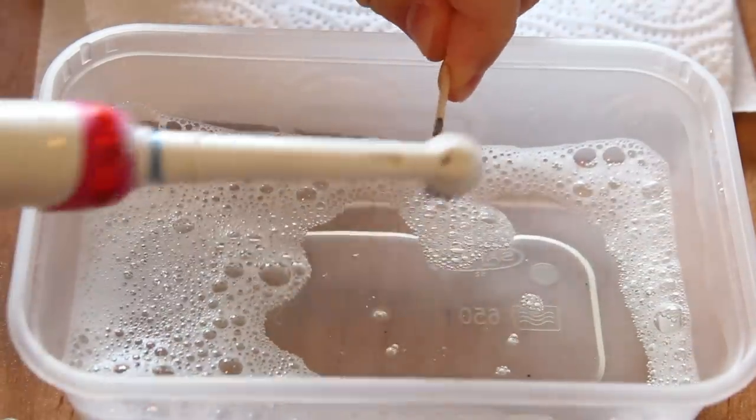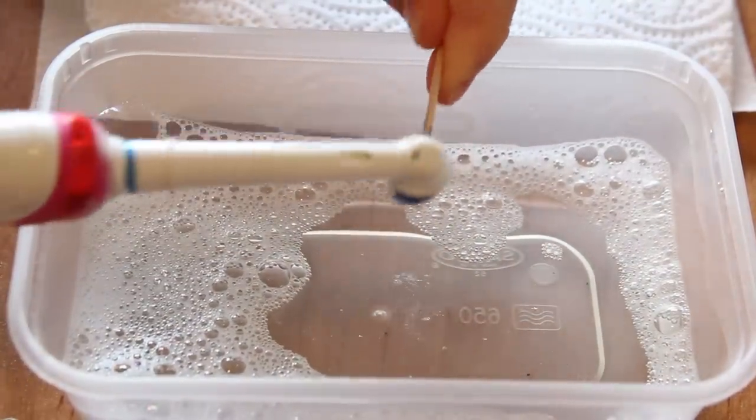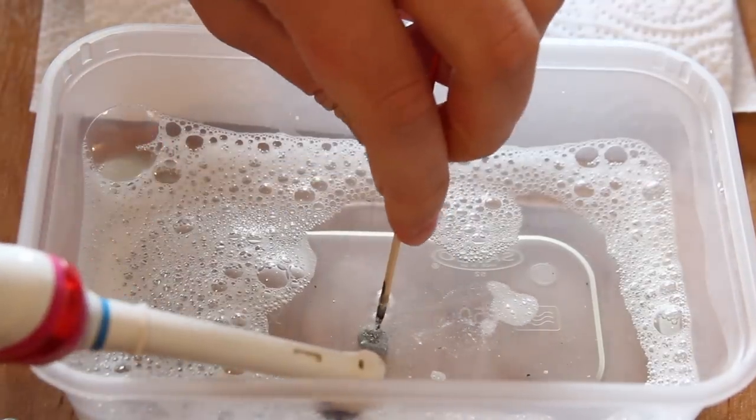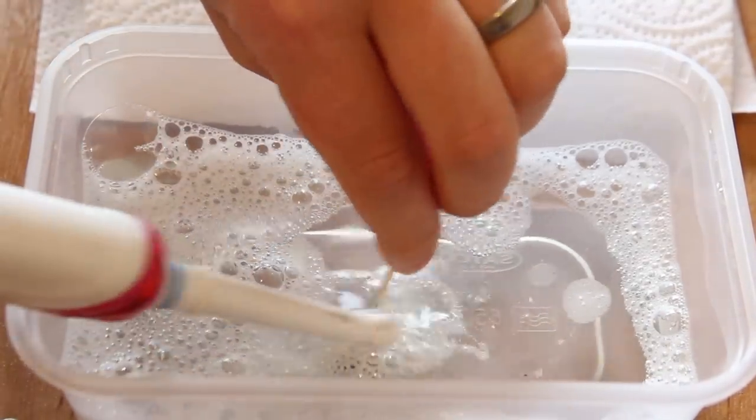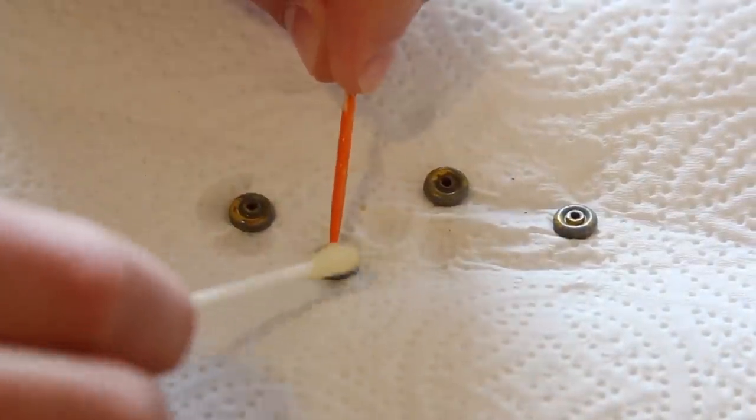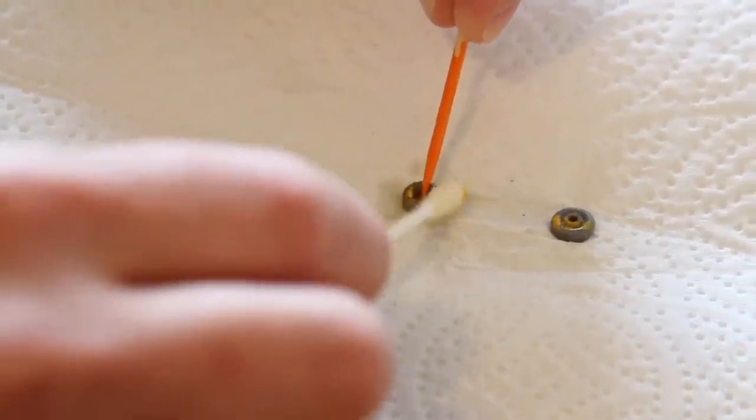Next I'll just give the wheels a clean up while the body work is drying. Just a bit of hot soapy water to remove all of the dirt and any of the loose paint. And then I can use some brake fluid on the wheels themselves to remove the remaining paint.